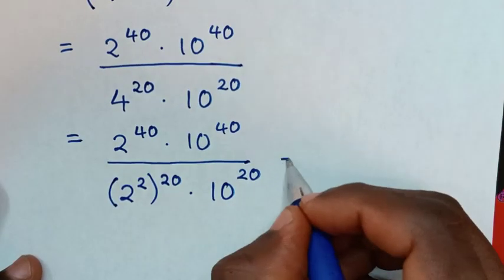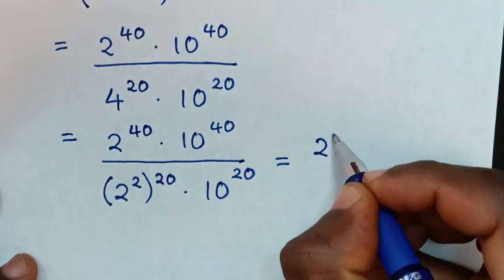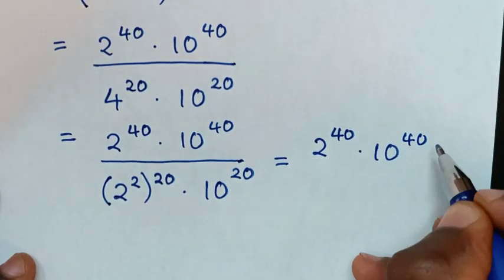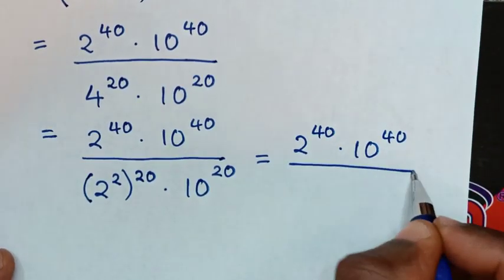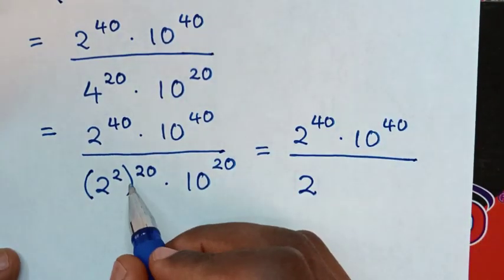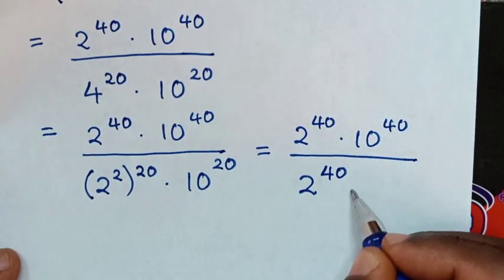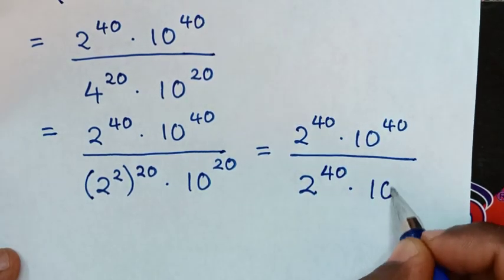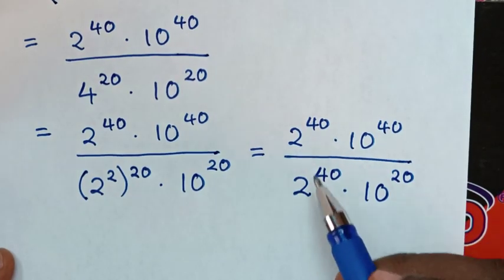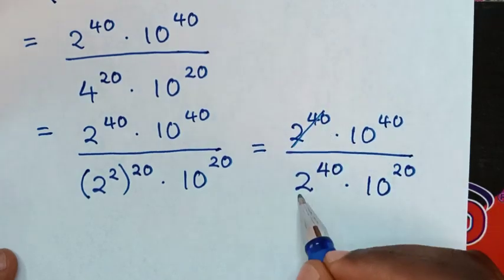It will be equal to: in the numerator, that is 2 power of 40 times 10 power of 40, over — we open the bracket, so it will be 2 times 20 is 40, giving 2 power of 40, then times 10 power of 20. Now 2 power of 40 and 2 power of 40 — this and this will cancel.